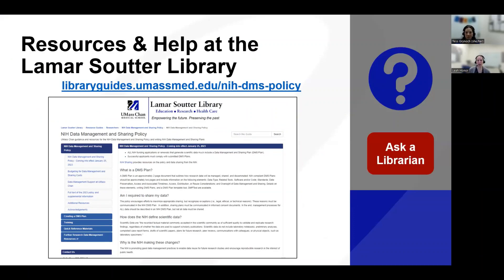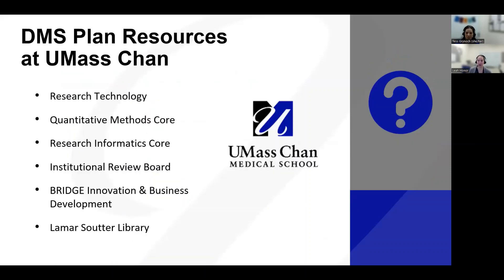Here at UMass Chan, we have put together a library resource guide collecting information, training, resources, and quick start references available through the Lamar Souter Library. You can also always use the Ask a Librarian button to submit any questions you may have, and it will be routed to the appropriate librarians. For further help, please reach out to these institutional partners. They can help with budgeting, de-identification, intellectual property considerations, informed consent, and much more.